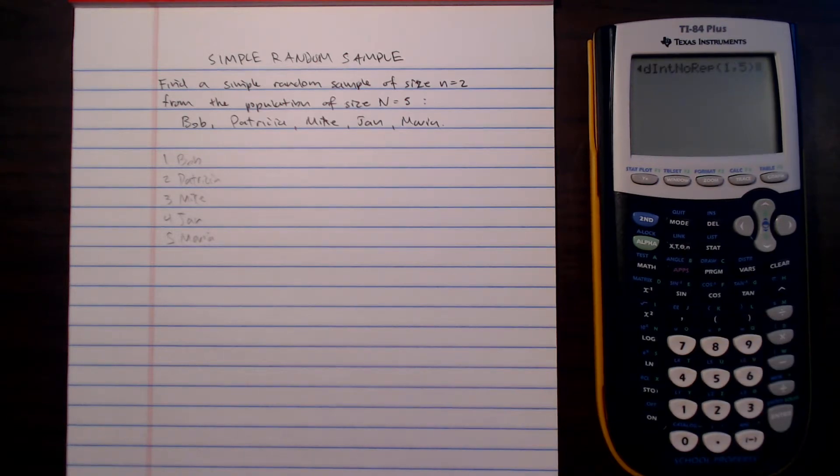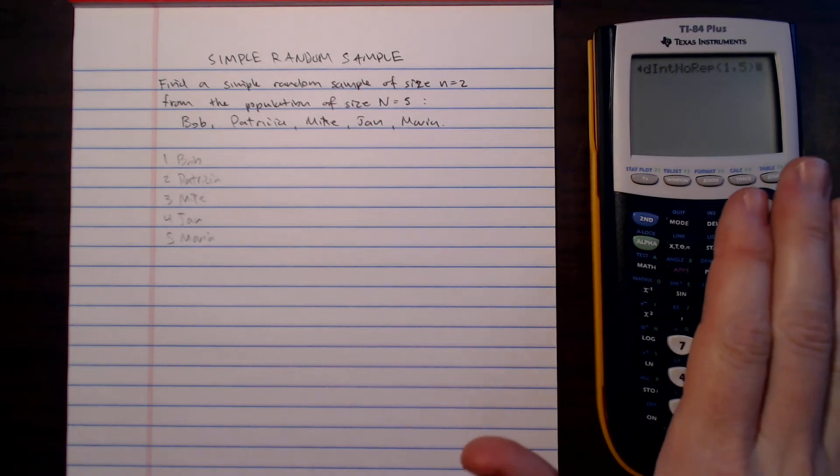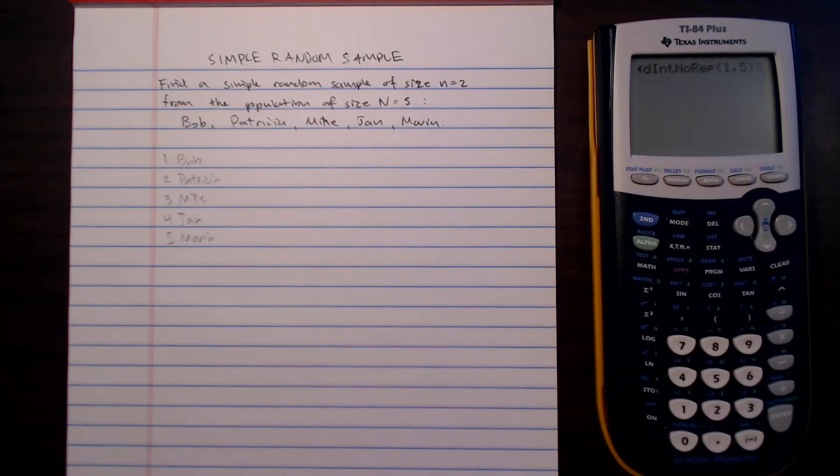Now once you do this, on a TI-84 Plus, these are the only two entries that you need to put in. It's going to completely reorder those five entries. So it gives us a new list that's no longer in order.